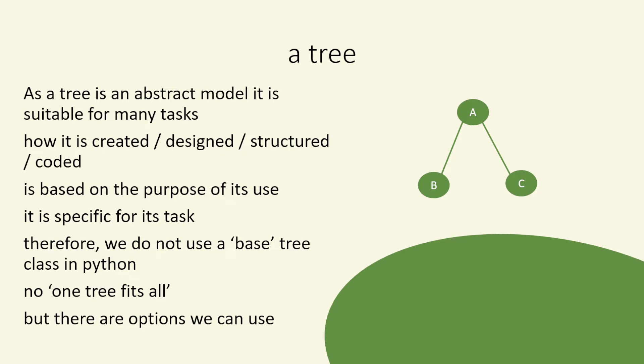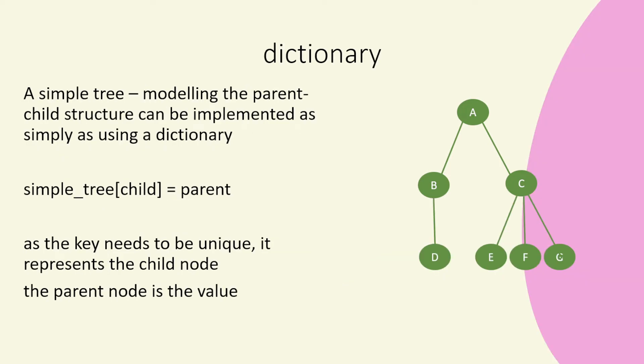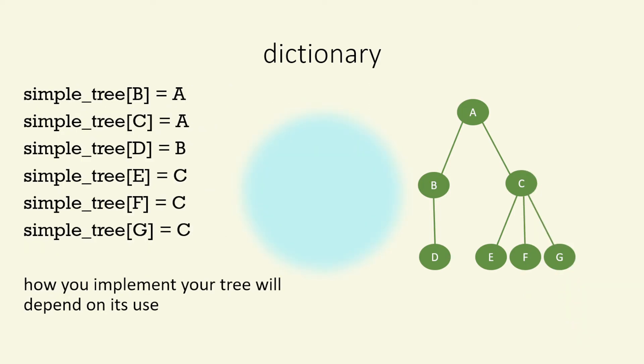So we don't really have the tree code and use that for everything. We actually have different forms of code that structurally are trees, but they apply the logic we can use when using a tree to different tasks. So for example, if we just want to model a different structure, we could use a simple dictionary. Now the key needs to be unique. So that would be the child and the value would be the parent. In this example, we can see that we've used a dictionary to model the tree that you can see on the right.